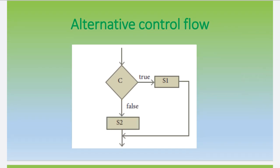Here is the flowchart for alternative control flow. First, there is a diamond symbol representing a decision. The condition is written inside the decision symbol. If the condition is true, statement s1 executes. If false, statement s2 executes. When condition is true and s1 executes, the else part is skipped. When condition is false, the else part executes. This is the alternative statement.